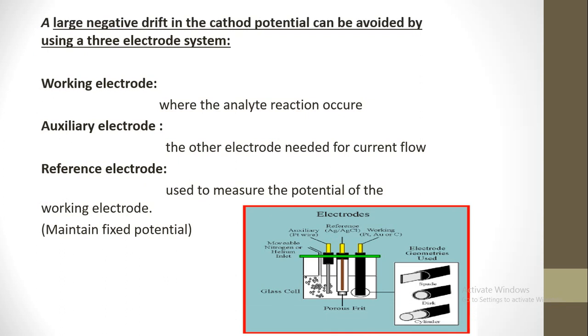A large negative drift in the cathode potential can be avoided by using a three-electrode system: a working electrode where the analyte reaction occurs, an auxiliary electrode as the other electrode needed for current flow, and a reference electrode used to measure the potential of the working electrode to maintain fixed potential.